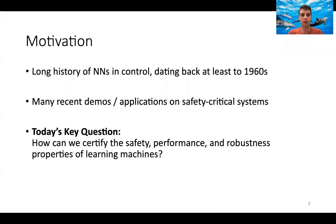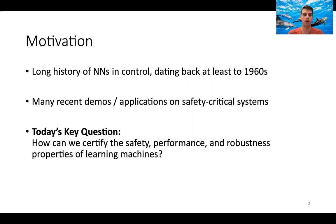There's a lot of excitement — and this has been going on for a long time — about neural networks and control systems, dating back at least to the 1960s. More recently, there have been demos and applications of neural networks on safety-critical systems. Today we're going to try to answer the key question: how can we certify the safety, performance, and robustness properties of learning machines?